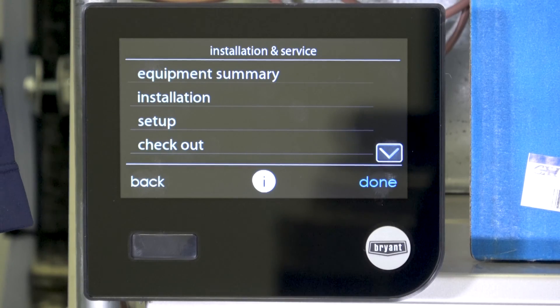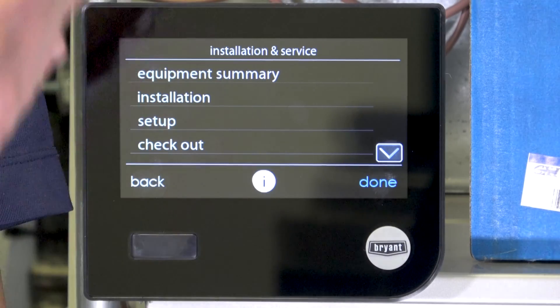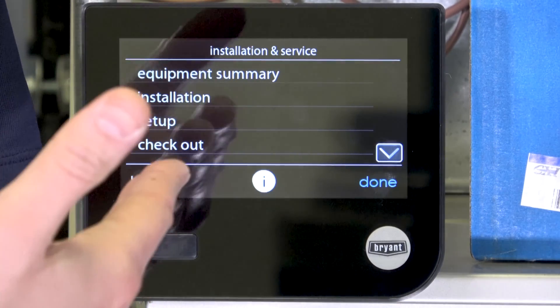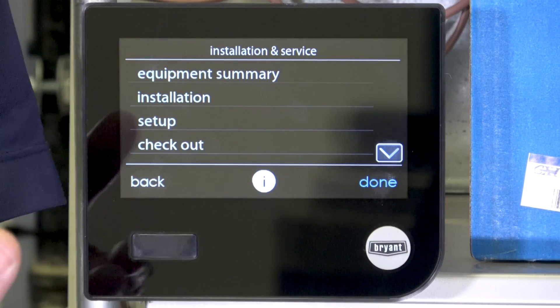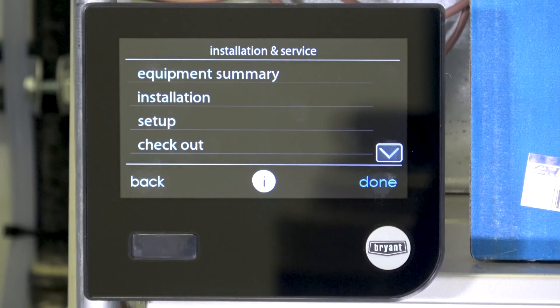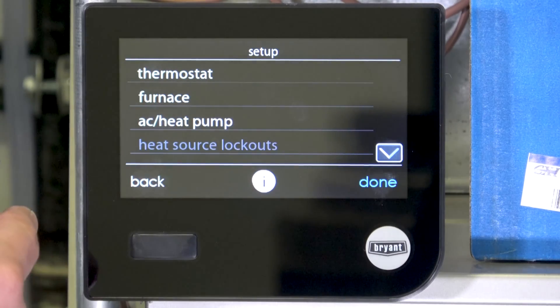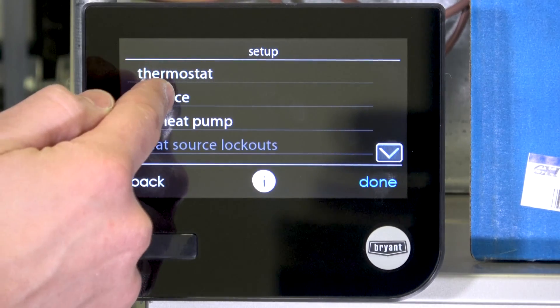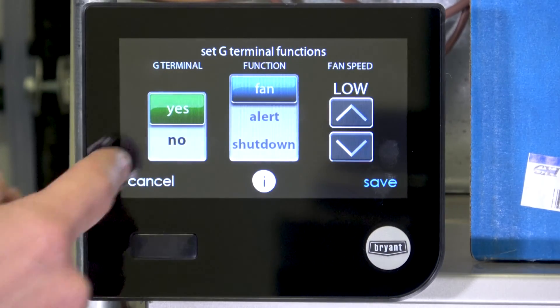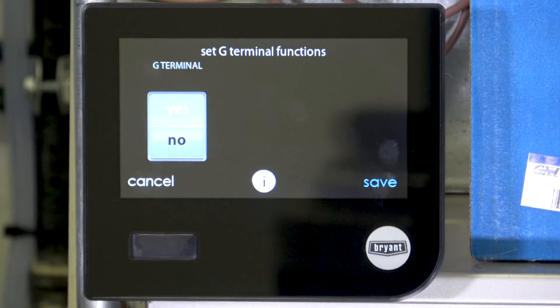Now that we have the detector wired up to the furnace input, we need to tell the wall control, the Bryant Evolution, Carrier Infinity or ICP Ion wall control what to do with that message. All right, so once I'm in the service screens, I'm going to select setup. I'm going to select furnace because I'm wired to the furnace circuit board and I'm going to scroll down to where it says G terminal. It normally would look like this. It would have nothing on it.